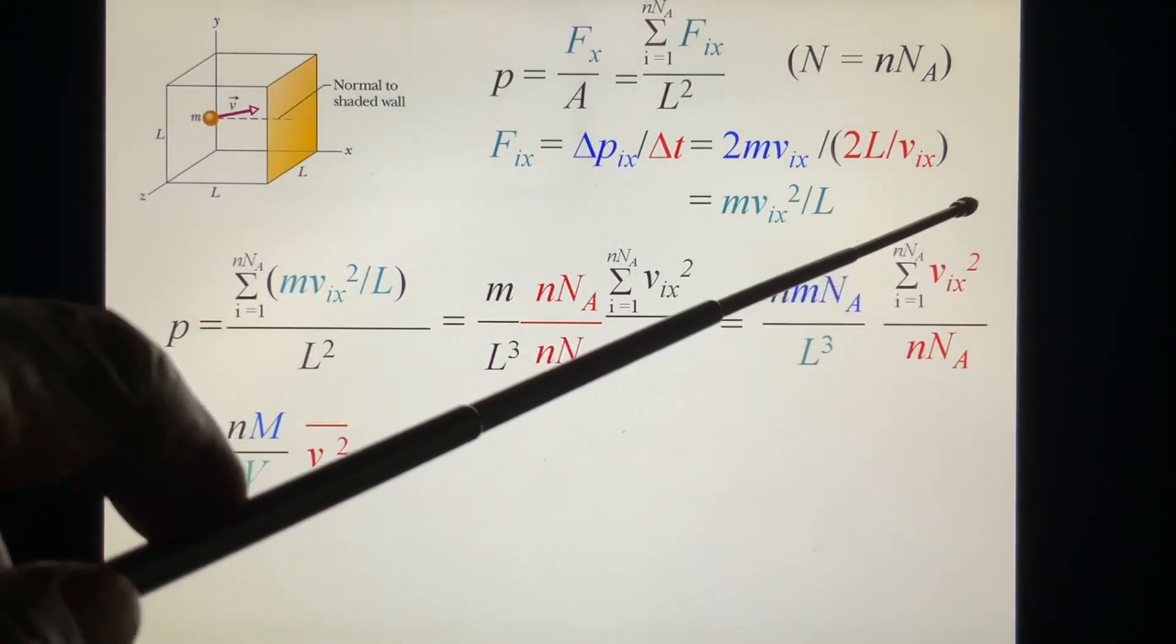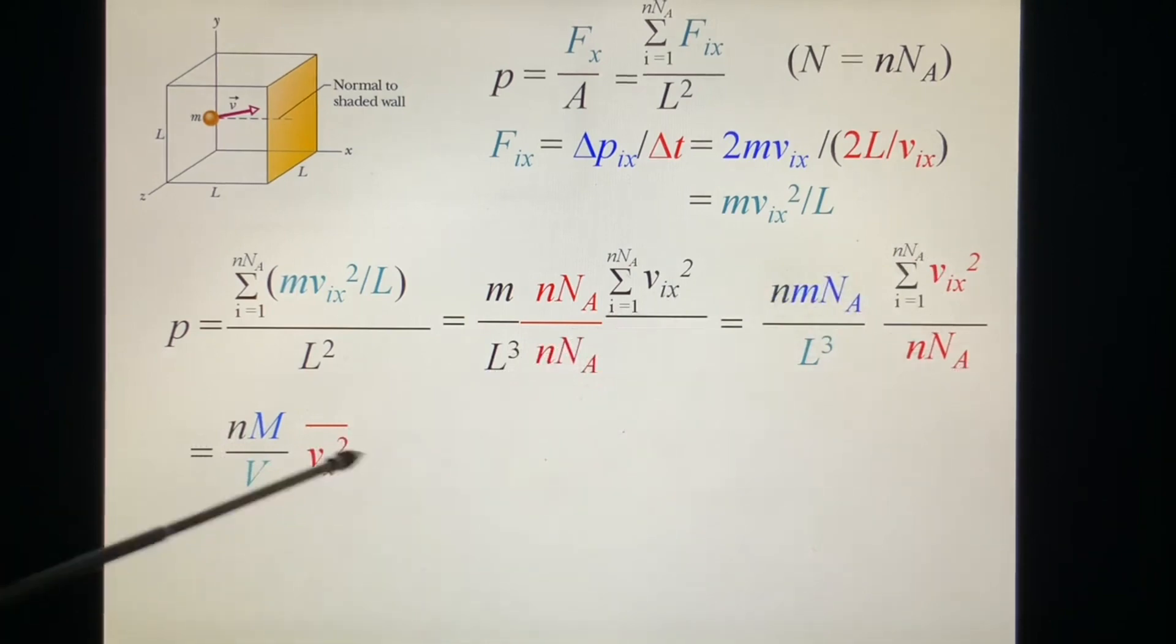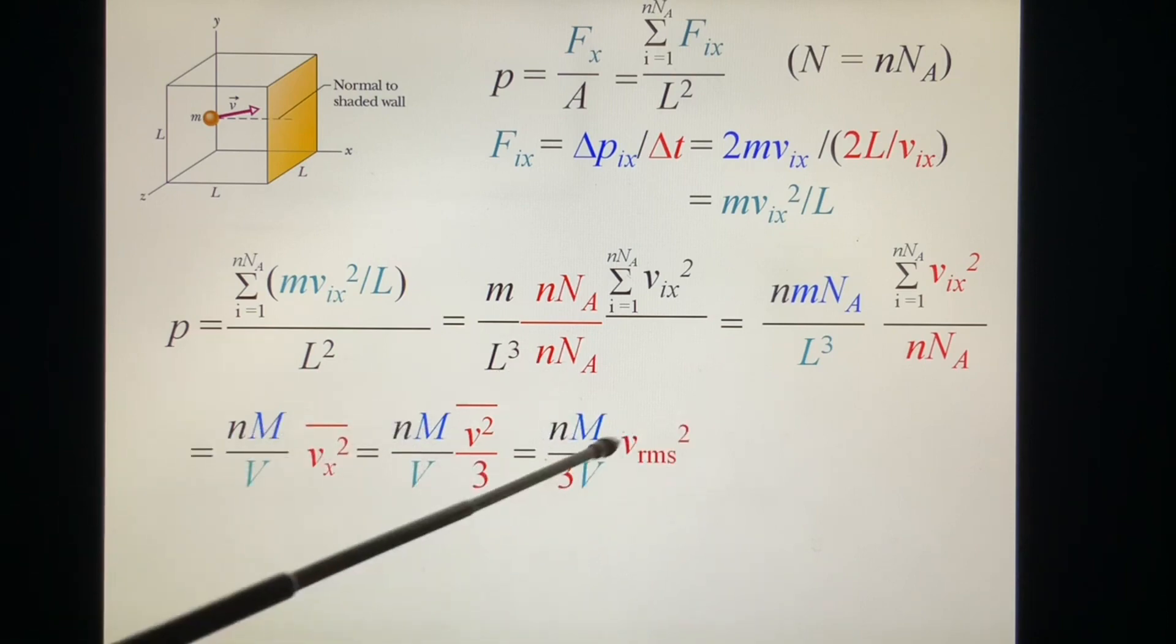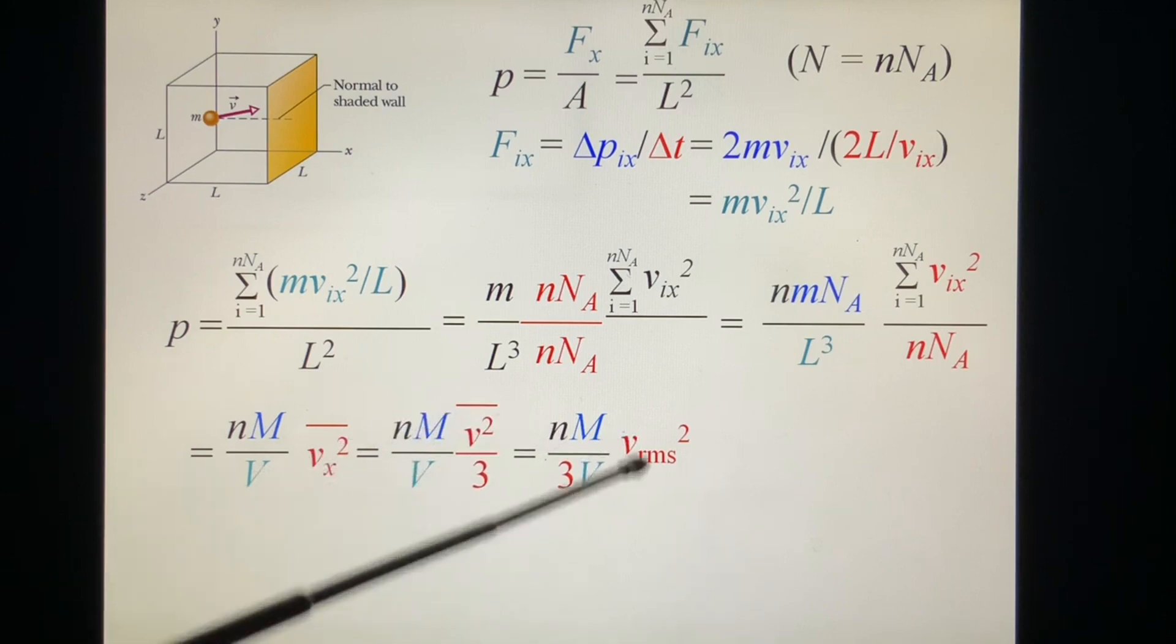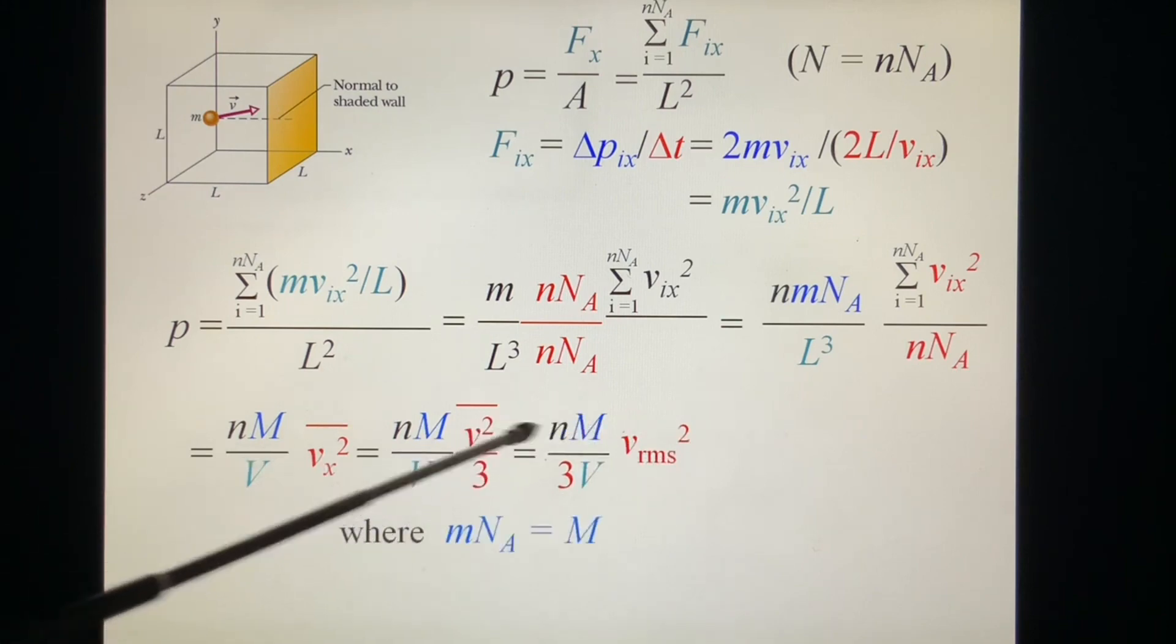And look at this one. NA is Avogadro's number. m is the mass of one molecule. So this includes one mole of molecules. So we rewrite this equation as n times molar mass M, because this is one mole, you have Avogadro number of molecules, each one has mass m. So the total is molar mass. L cubed is the volume. And this is the Vx average squared. This is the red one. Vx squared average: you have 1, 2, 3, 4, 5 divided by the total number. So this is Vx squared average.